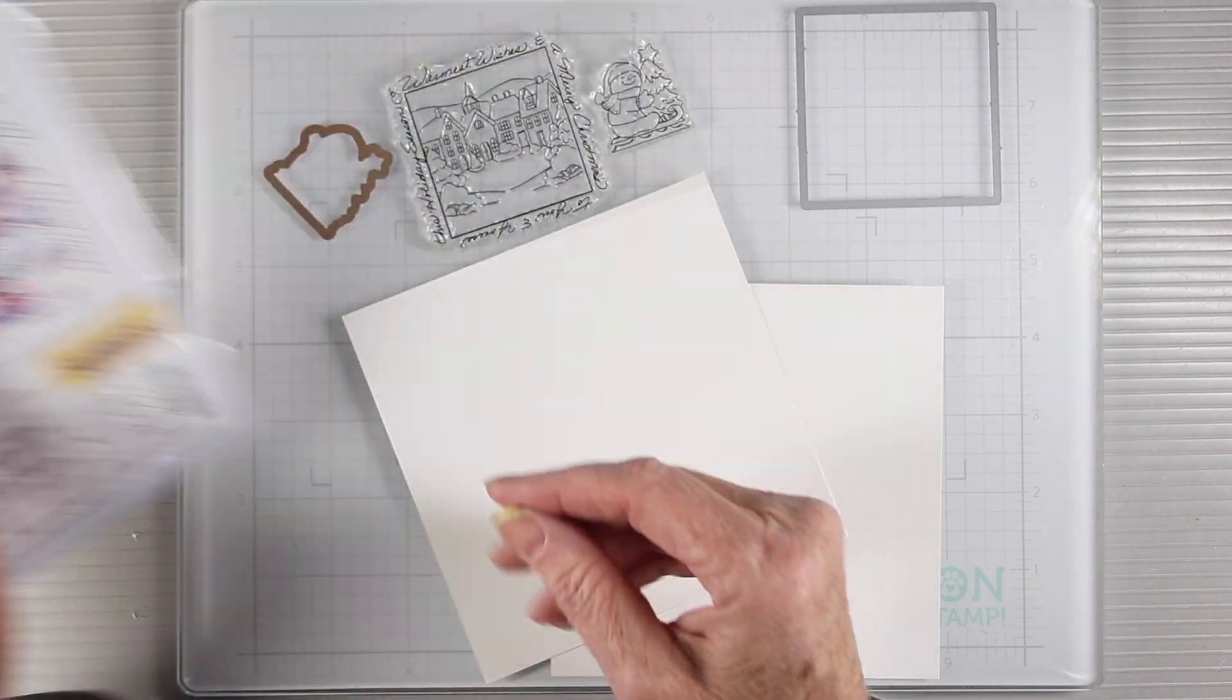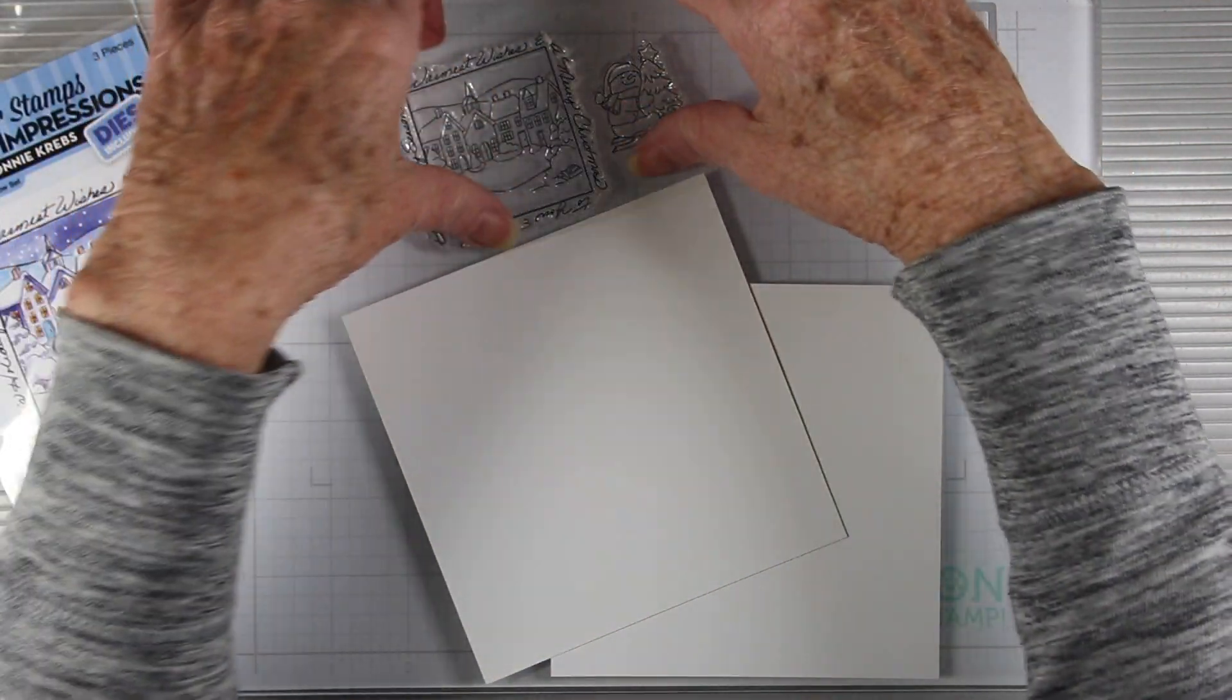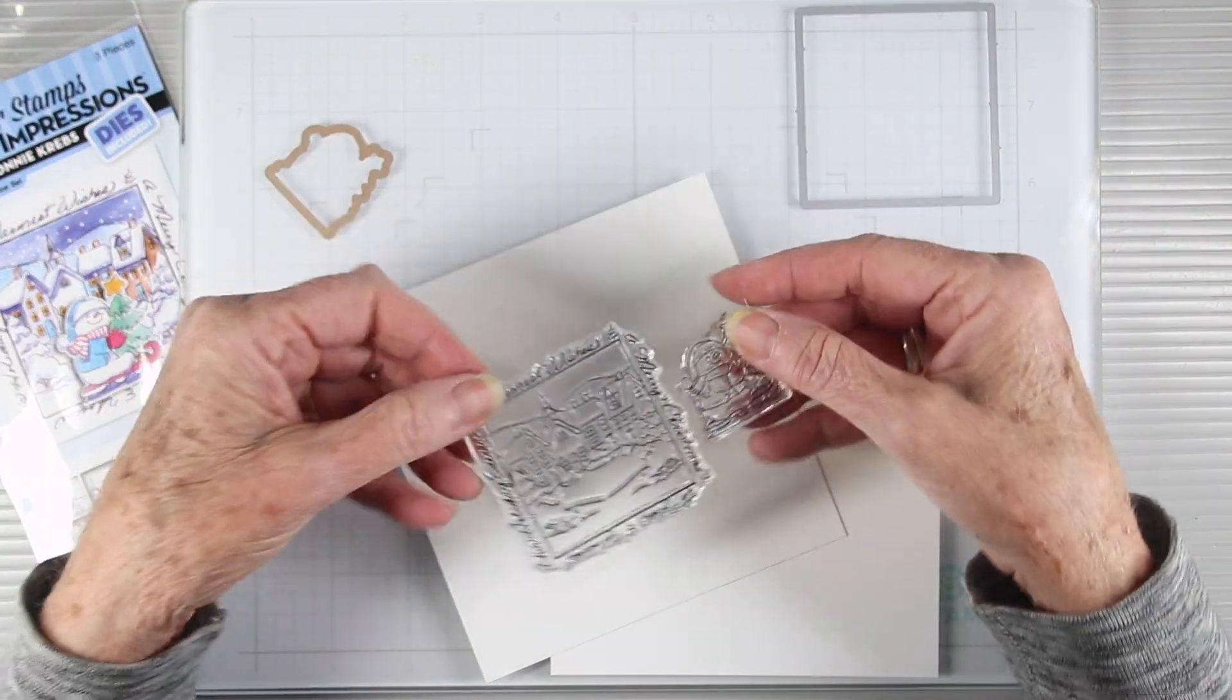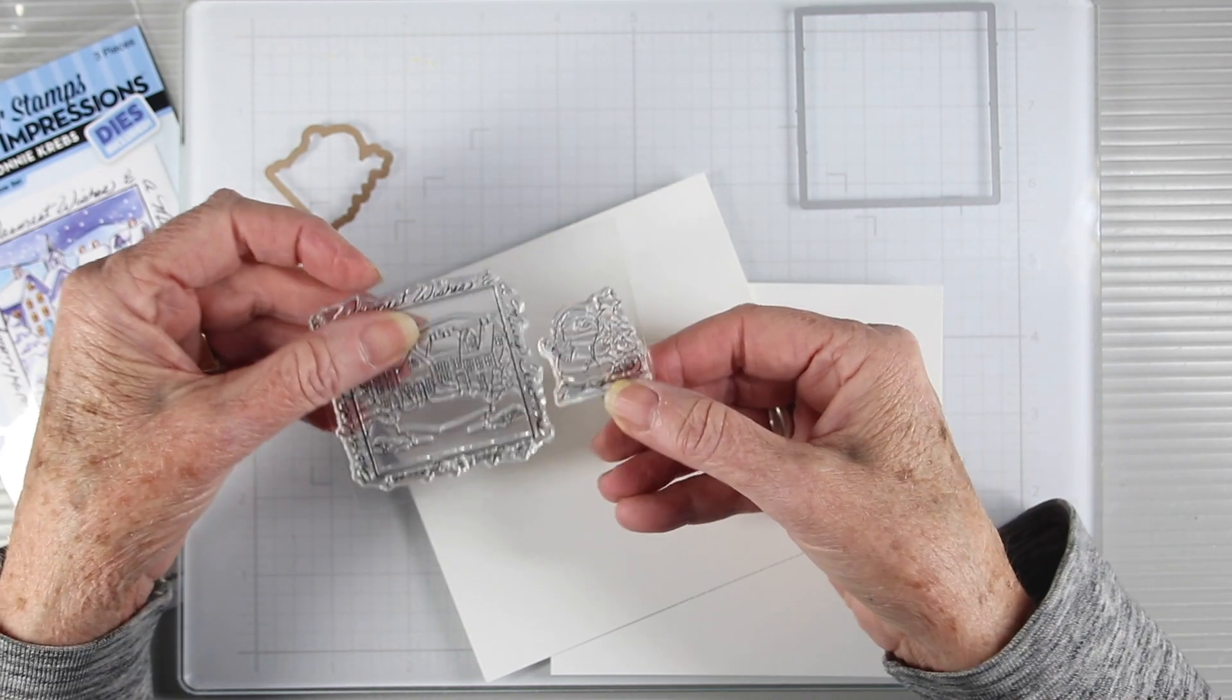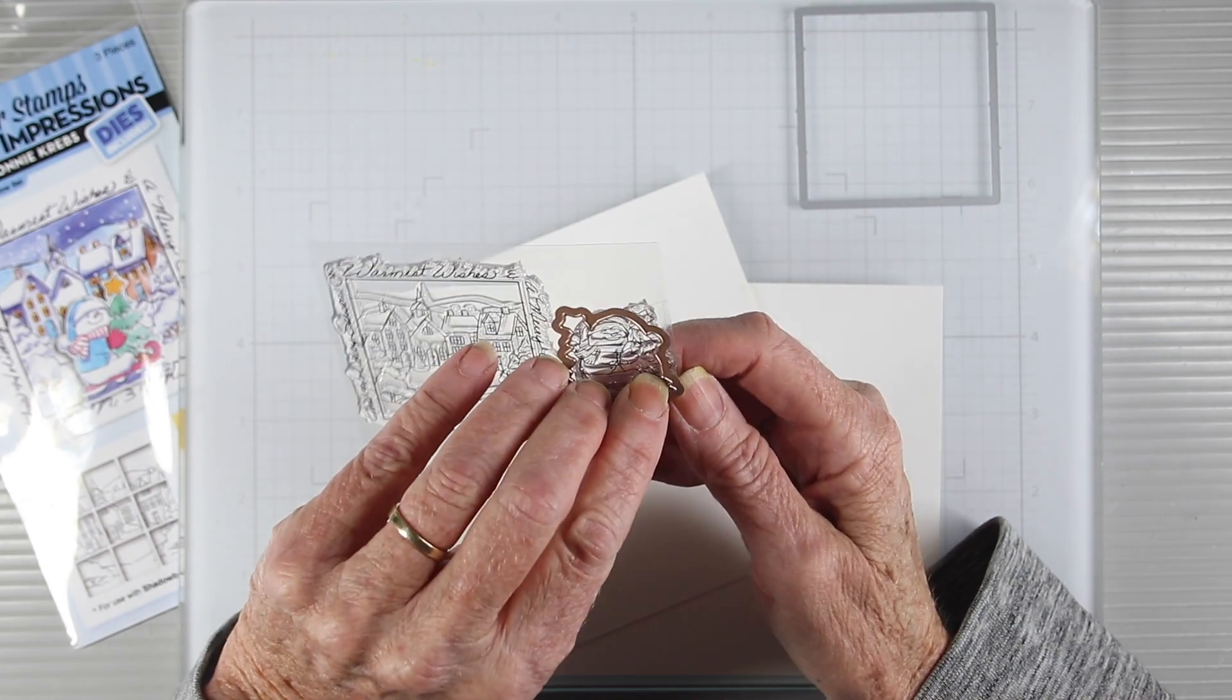I'm featuring the little snowman and the scene in the background. The stamp measures about two and a half inches by two and a half, and then the little snowman can be used to sled across the front and it has a coordinating die.